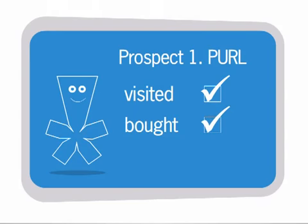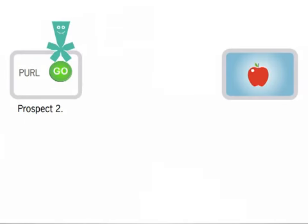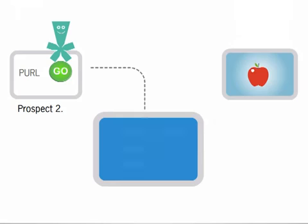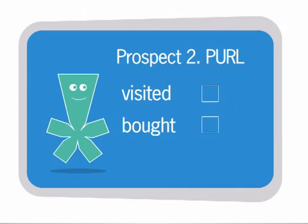Now you'll see that Intimus has tracked Prospect 1's responses and lets me know what's happened. Back to Prospect 2 — he visits the site but leaves without buying. So far I've sold one apple, but was anyone else interested? Intimus is showing me that Prospect 2 was interested enough to have visited the website, but he hasn't bought yet.